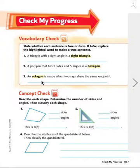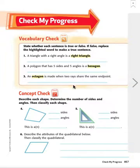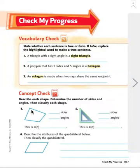Number three: an octagon is made when two rays share the same endpoint. An octagon is actually a closed polygon that has eight sides, so this is false. What happens when two rays share the same endpoint? This definition — when I have a ray or line here and it shares the same endpoint with another ray or line — this corner where these two lines meet is actually called an angle. A-N-G-L-E. That's the definition for two rays sharing the same endpoint, so this one is false.